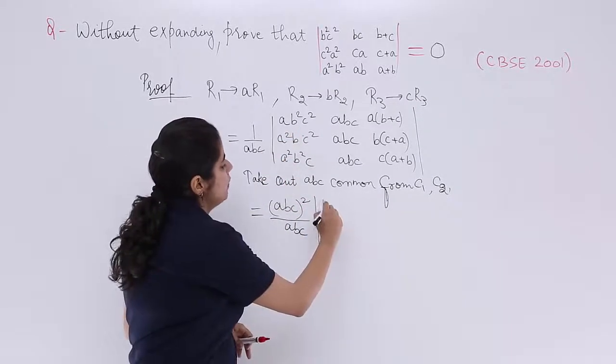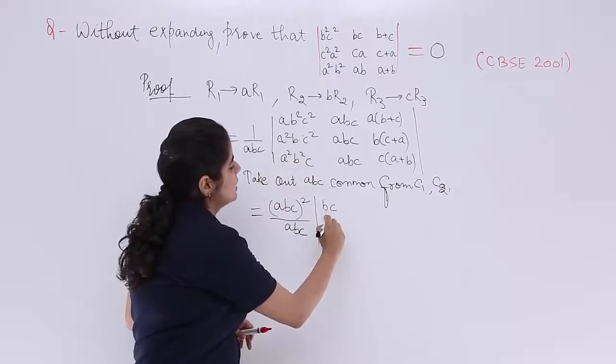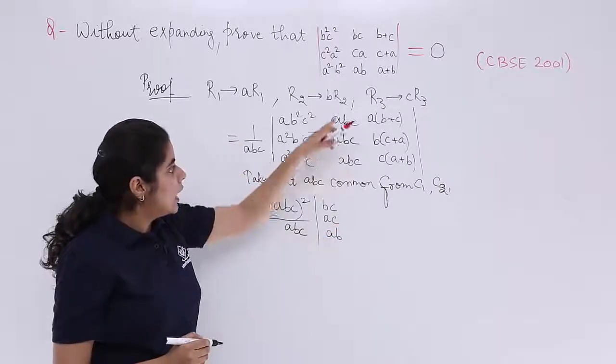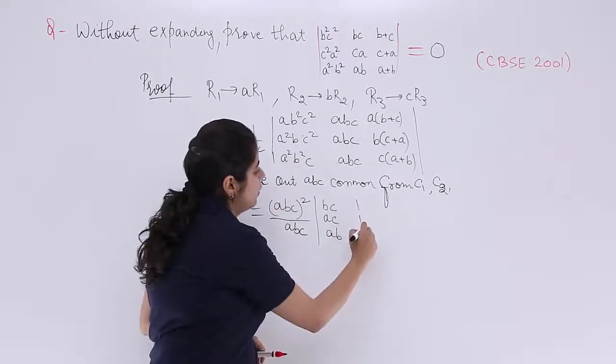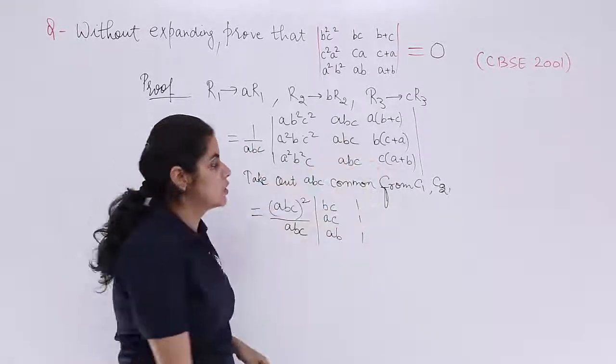ABC is common, only BC is left. ABC is common, only AC is left. ABC is common, only AB is left. Getting it? ABC is common, 1, 1, 1 is left.